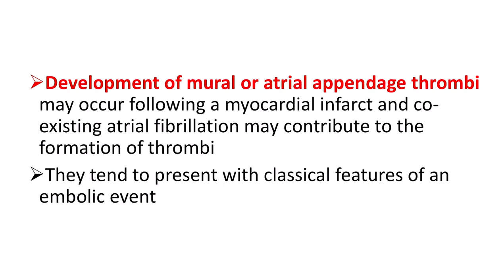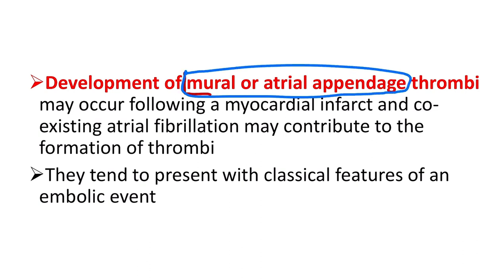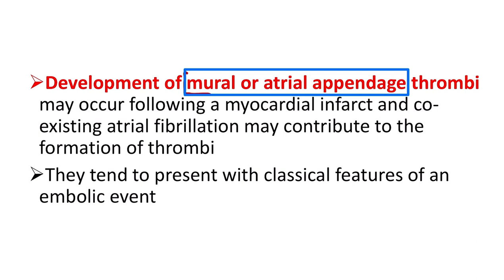Development of mural thrombus or atrial appendage thrombus occurs usually after myocardial infarction. There is a chance of thrombi forming in the heart following myocardial infarction, and coexisting atrial fibrillation may also contribute to the formation of thrombi.